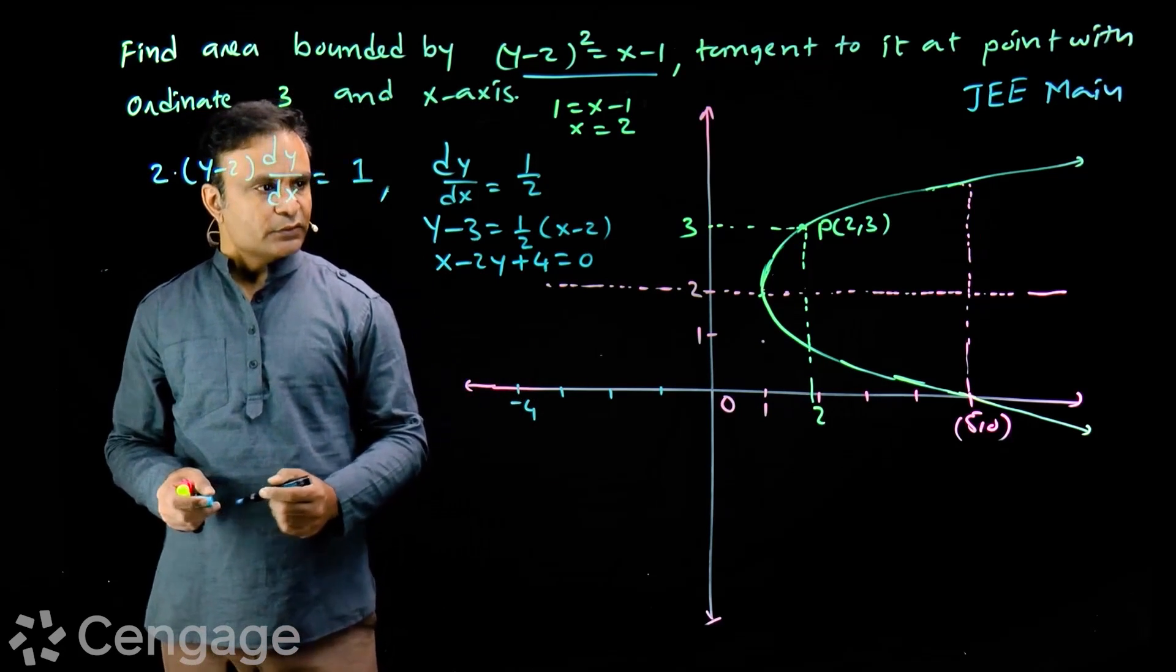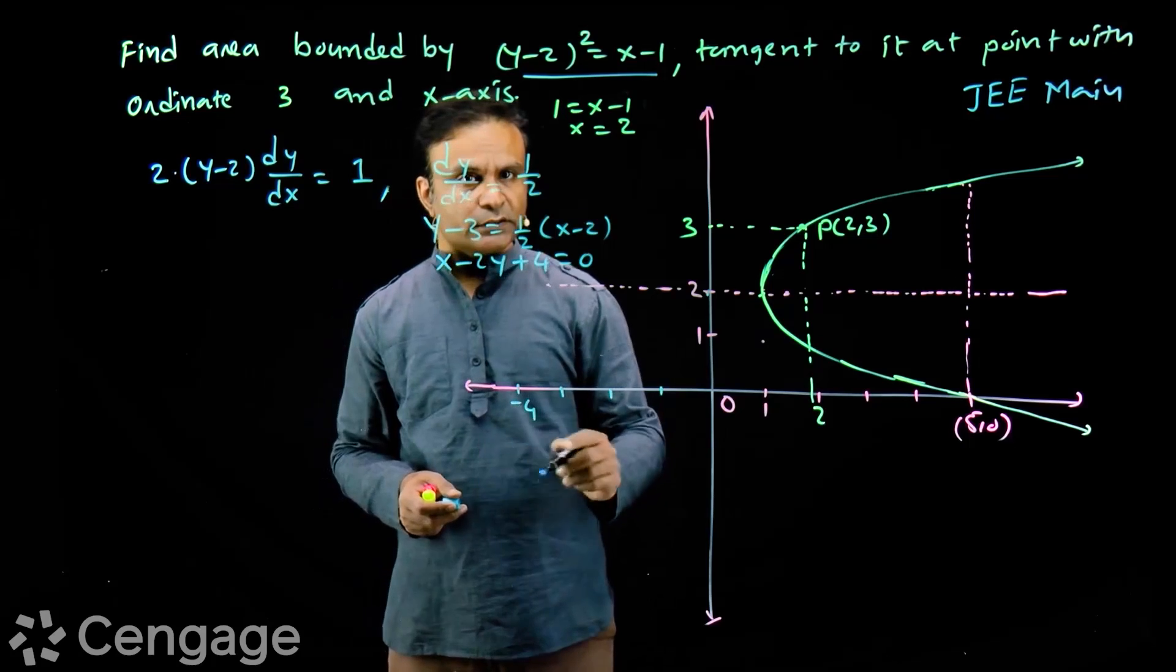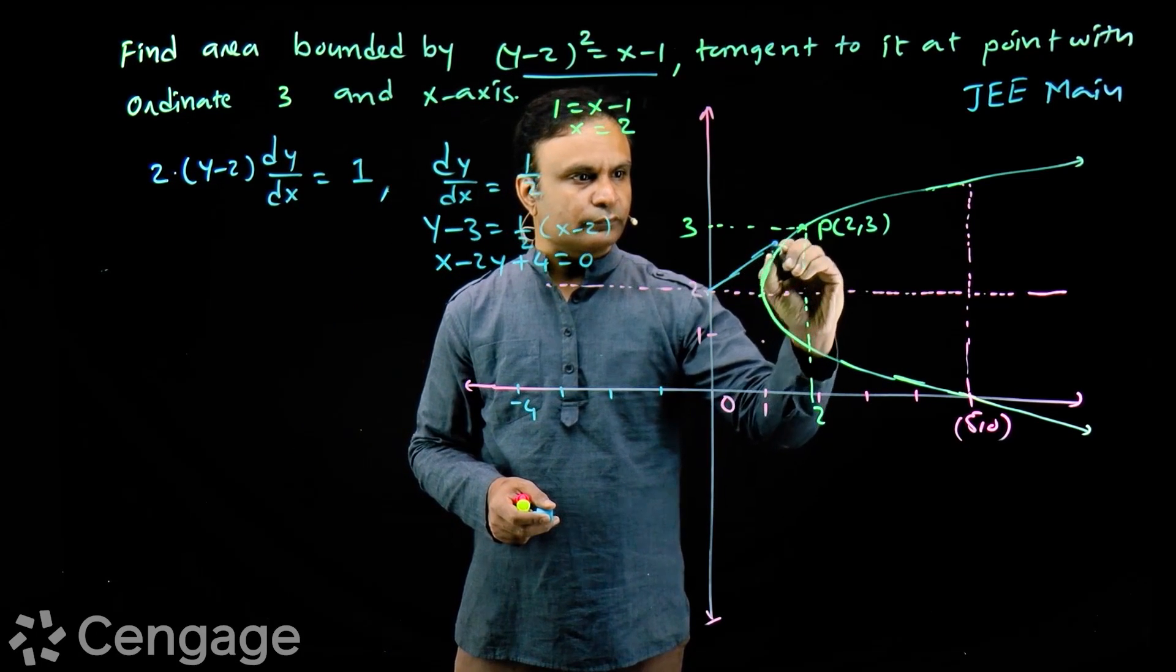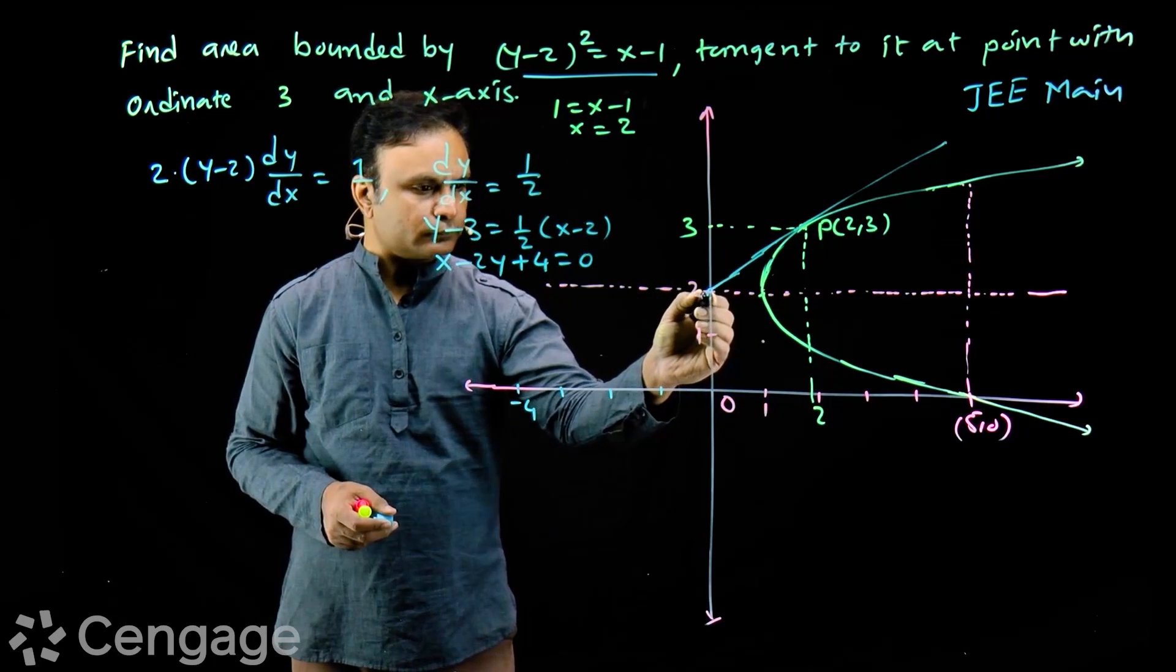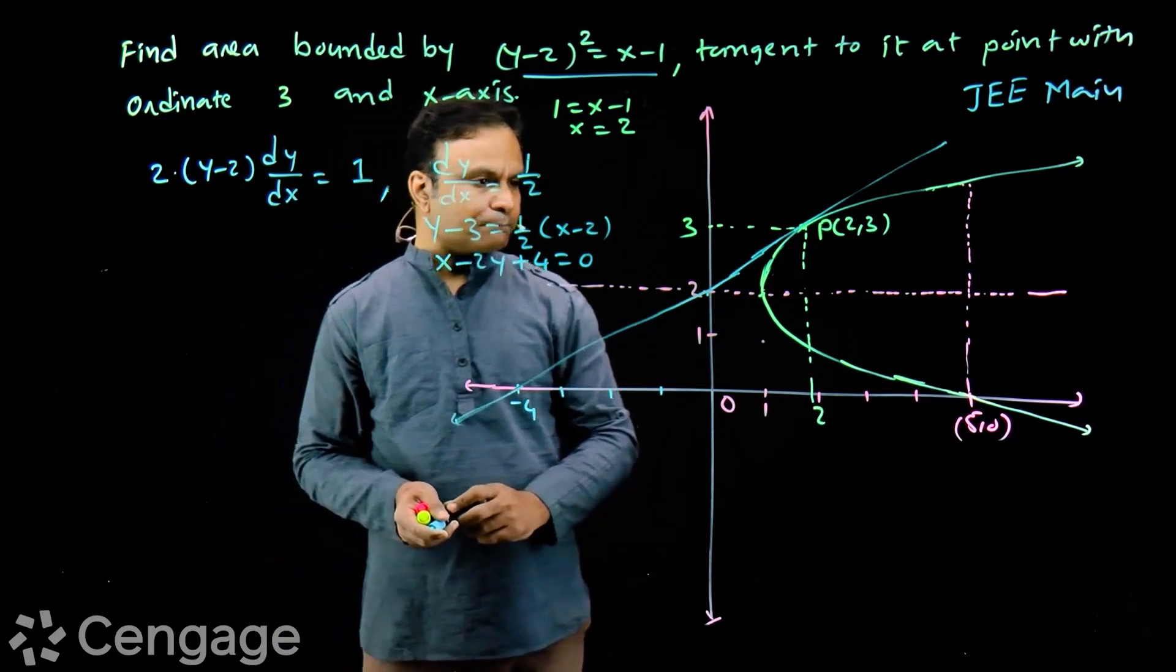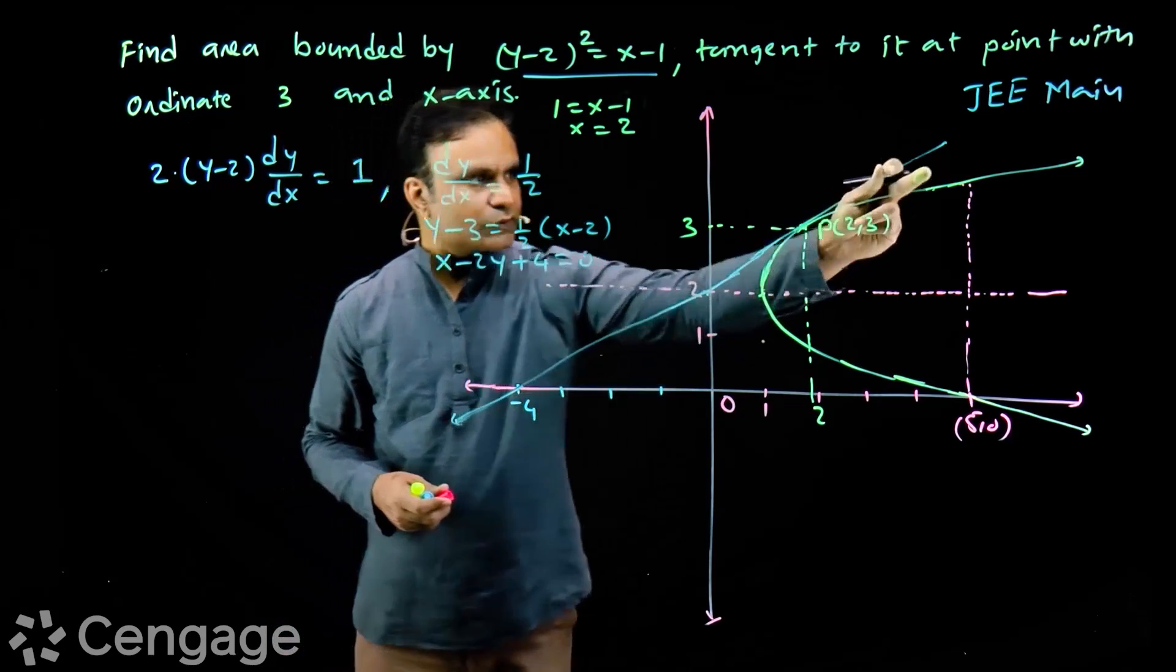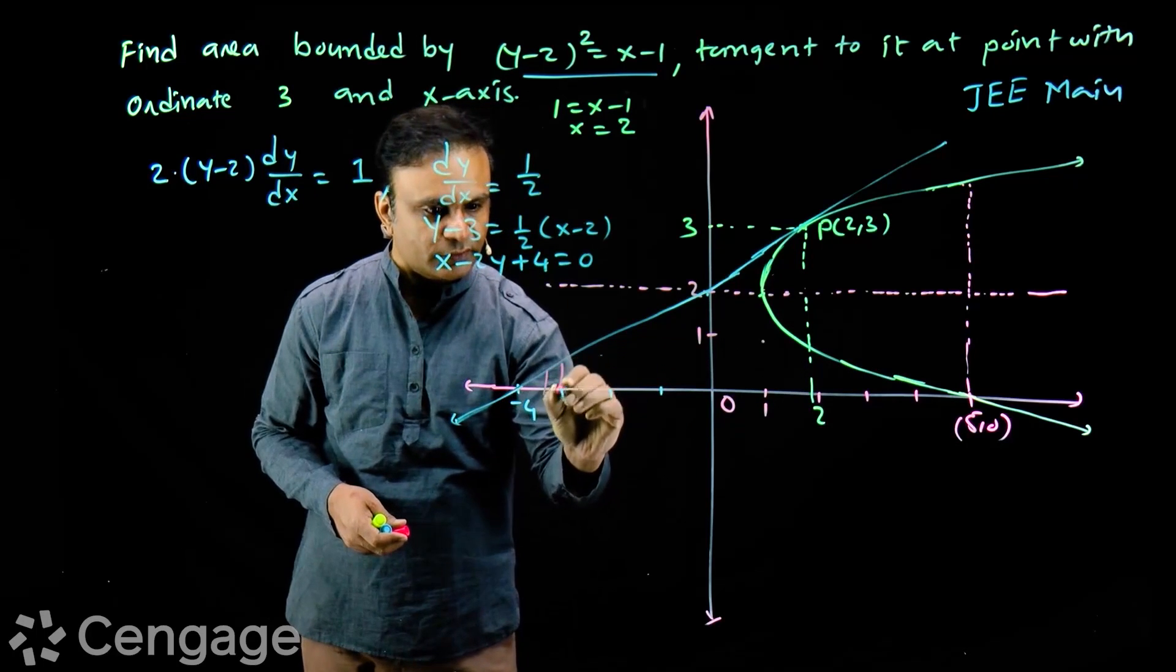Let's draw the tangent. When y=0, x=-4, and when x=0, y=2. So the tangent will pass through this point and through (-4,0). This is the tangent line. Now we have to find area bounded by this parabola, this tangent line, and x-axis. It is this area.